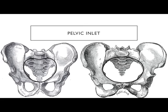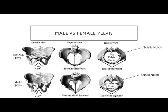Looking at the shape of the pelvic inlet: the female pelvic inlet is oval-shaped, whereas the male pelvic inlet can be described as heart-shaped or apple-shaped. Looking at the pelvis models: the female is rounder and larger. On your exam you'll see one of these models, so become familiar with them.